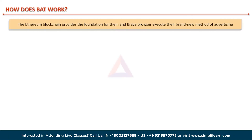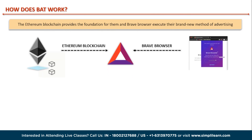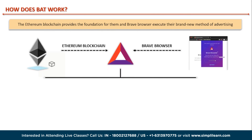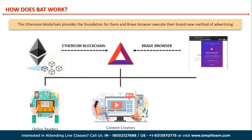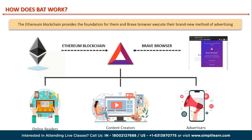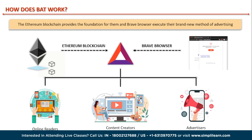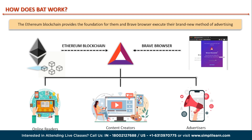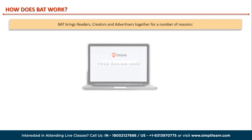The Ethereum blockchain serves as the Basic Attention Token's foundation. Its creators have collaborated with the Brave browser to implement their innovative advertising strategy. Brave has implemented the Basic Attention Metric, or BAM, Attention Measuring System. It uses an anonymous ledger system to distribute money between readers, content creators, and advertisers, bringing them together for many reasons.